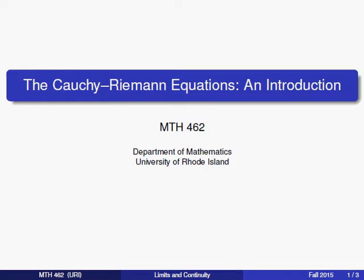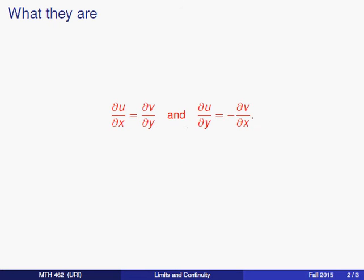But to get started, let's talk about what exactly the Cauchy-Riemann equations are. They are simply a pair of equations that look like this. The partial derivative of u with respect to x is equal to the partial derivative of v with respect to y, and the partial of u with respect to y is the opposite of the partial of v with respect to x.